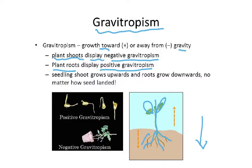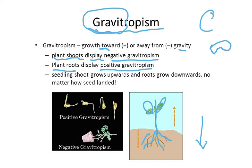This is called positive or negative gravitropism. If it's towards the stimulus — the stimulus is gravity — then it's called positive; if it's away, it's called negative gravitropism. So seedling shoots grow upwards and roots grow downwards, no matter how the seed lands. Whether the seed lands in any position, the roots will always grow towards gravity and the shoots will always grow against gravity — negative gravitropism.